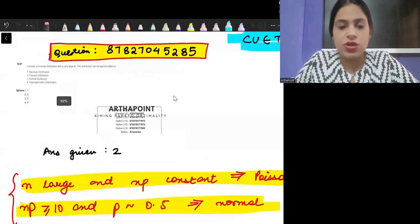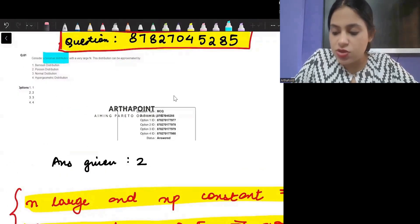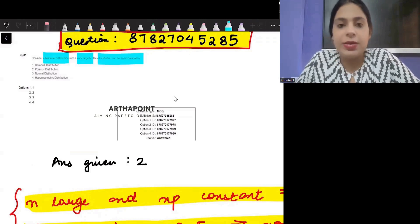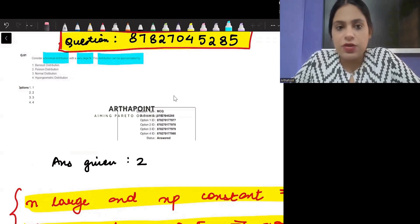Let's try to see this question. It says consider a binomial distribution with very large N. The distribution can be approximated by, and the right answer given for this question is Poisson distribution.